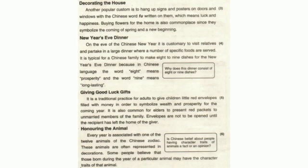Passage number five: It is a traditional practice for adults to give children little red envelopes filled with money in order to symbolize wealth and prosperity for the coming year. It is also common for elders to present red packets to unmarried members of the family. Key words: practice — kanama, shikaana; adults — baalighan; envelopes — lifafe; symbolize — alamat zaahir karna; prosperity — khushali, taraqqi; packet — lifafa/box; unmarried — gayr-shadi shudah; until — jabtak; recipient — lenewala; giver — denewala.